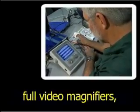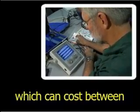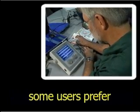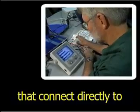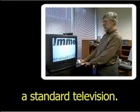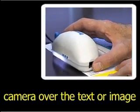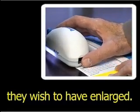Due to the expense of full video magnifiers, which can cost between $2,000 and $3,500, some users prefer less expensive systems that connect directly to a standard television. With these systems, users move a handheld camera over the text or image they wish to have enlarged.